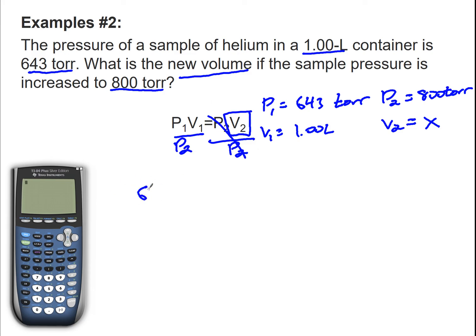P1 is 643 torr times V1, which is going to be 1.0 liters, divided by P2, which is going to be 800 torr. Everything's set up correctly, everything's plugged in correctly.